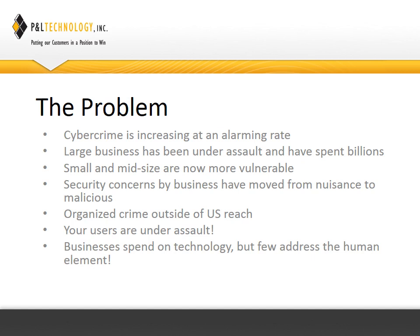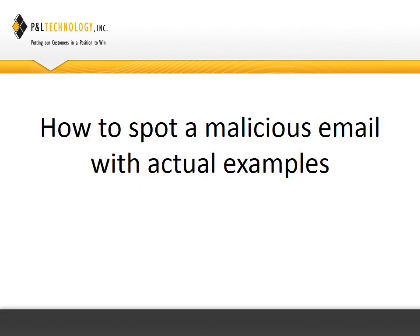Security concerns for businesses have also moved from nuisance to profit-motivated. Formerly it was kind of the kid in his mom's basement just trying to do something cool, but it's really since then shifted to organized crime that a lot of the time is outside the reach of US law enforcement — a lot of it coming from Eastern Europe or Asia. Your users are already under assault from malicious email. When we talk about malicious email, we mean email that if it tricks you into installing or opening the payload — things like viruses, malware, spyware, or even ransomware — will be installed on your PC and attempt to steal information, take over your PC, or cause other unwanted activity. But what we're seeing is businesses spend a lot of money on technology but very few are addressing the human element, and that's what we're going to focus on today.